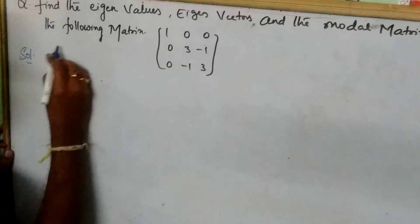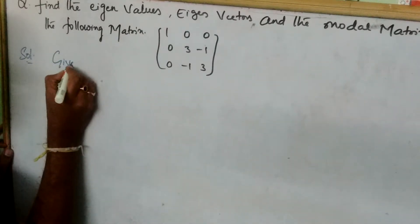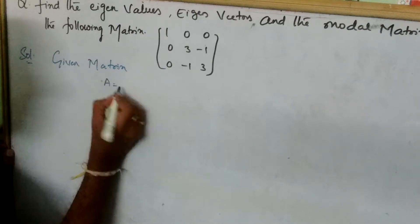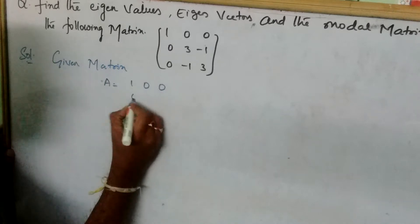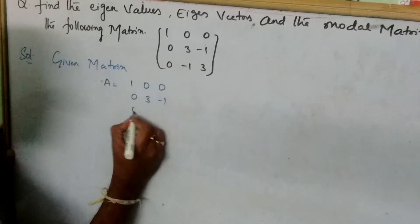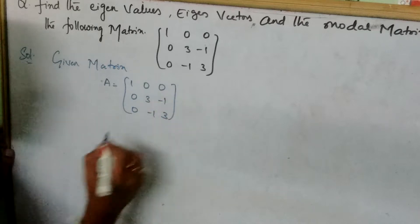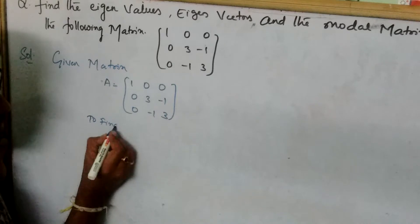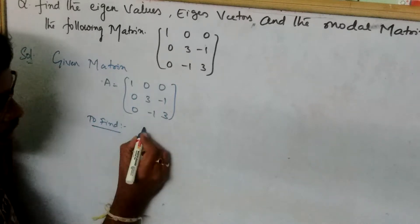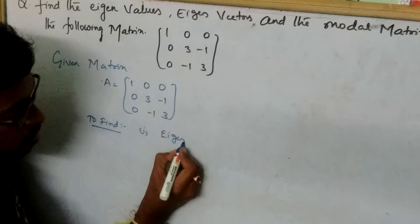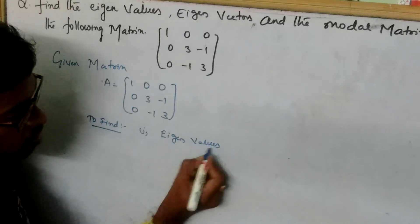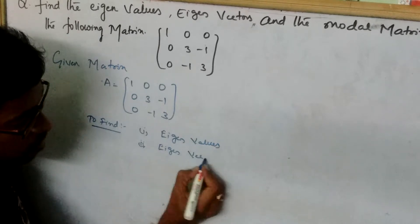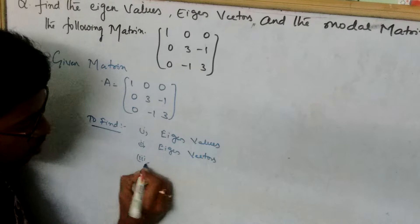First step: take the given matrix. Let A equal to 1, 0, 0 — 0, 3, minus 1 — 0, minus 1, 3. We have to find eigenvalues, eigenvectors, and the modal matrix.